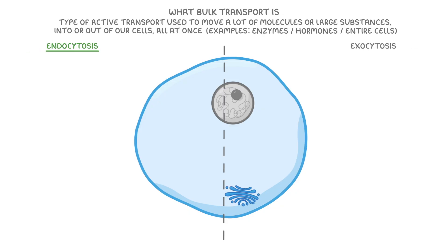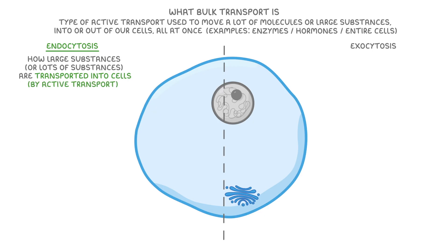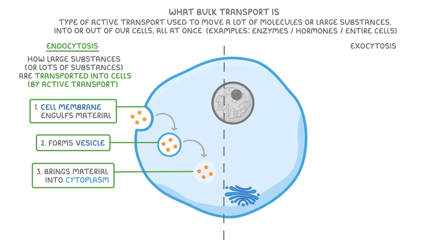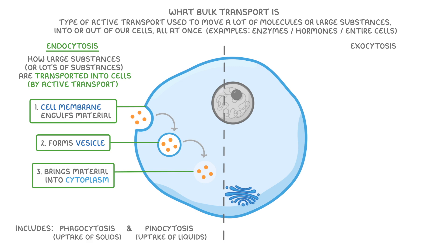Endocytosis is how large substances or lots of substances are transported into cells by active transport. For example, if the cell needs to take in a lot of particles, the cell membrane engulfs the material, which then forms a vesicle that brings the material into the cytoplasm where it can be used. This process includes both phagocytosis, which is the uptake of solids like entire cells, and pinocytosis, which is the uptake of liquids — things like molecules that are in solution.